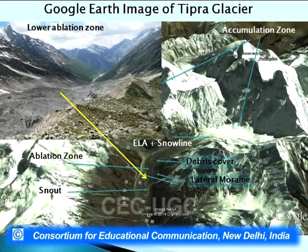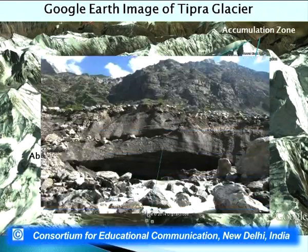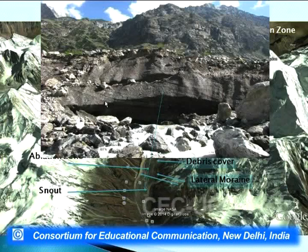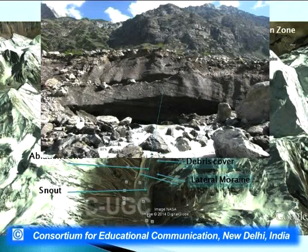This is the lower ablation zone, close to the snout position. You can see high ridges — the right and left lateral moraines — indicating glacial retreat. The snout is the position from where the river emerges. This is the Lakshman Ganga river from the Valley of Flowers National Park, emerging from the Tipra glacier — quite similar conditions to the Gangotri glacier.